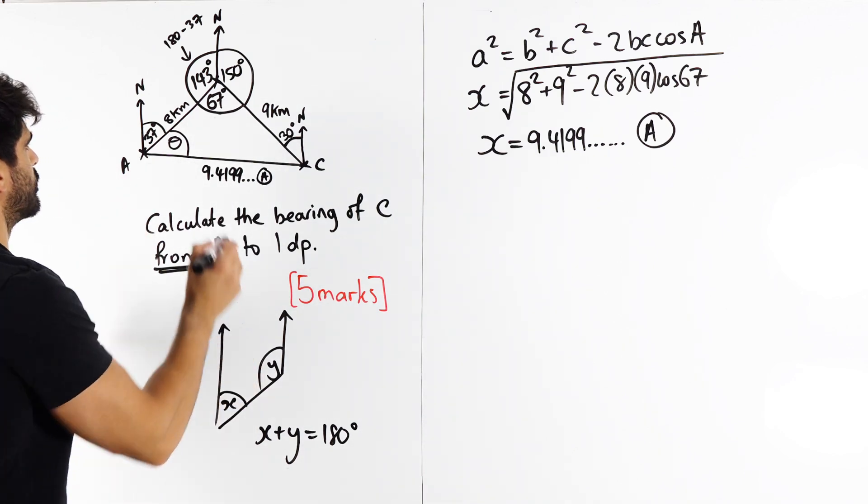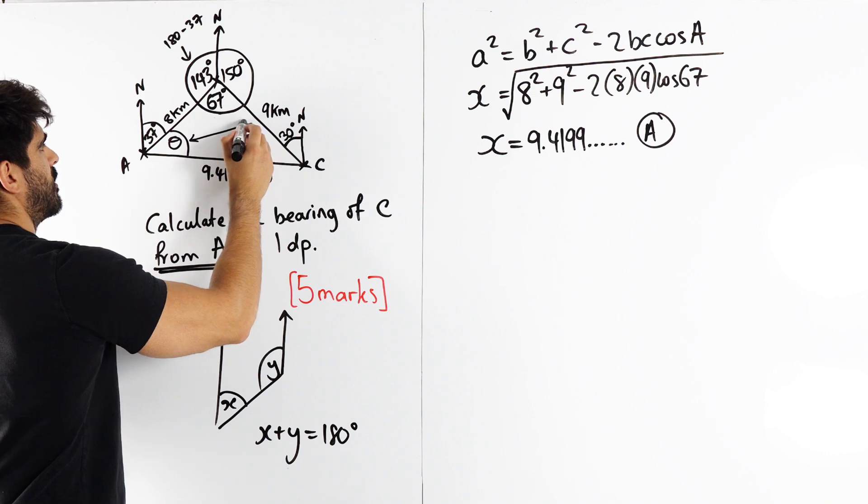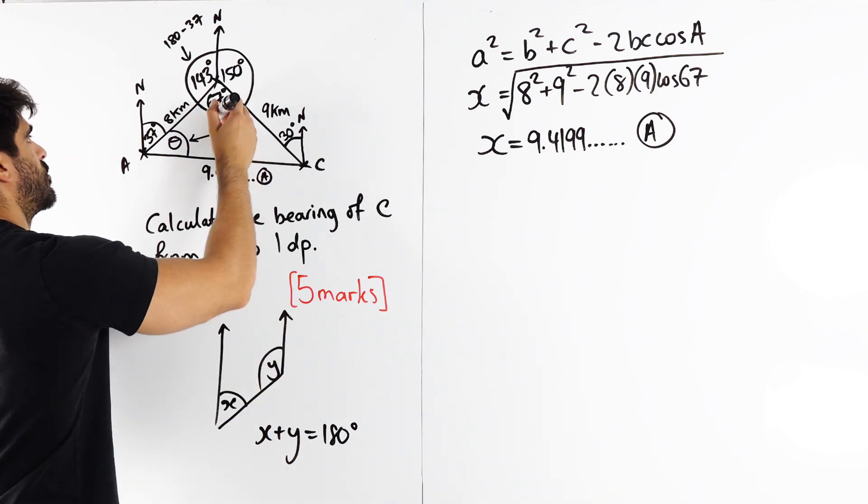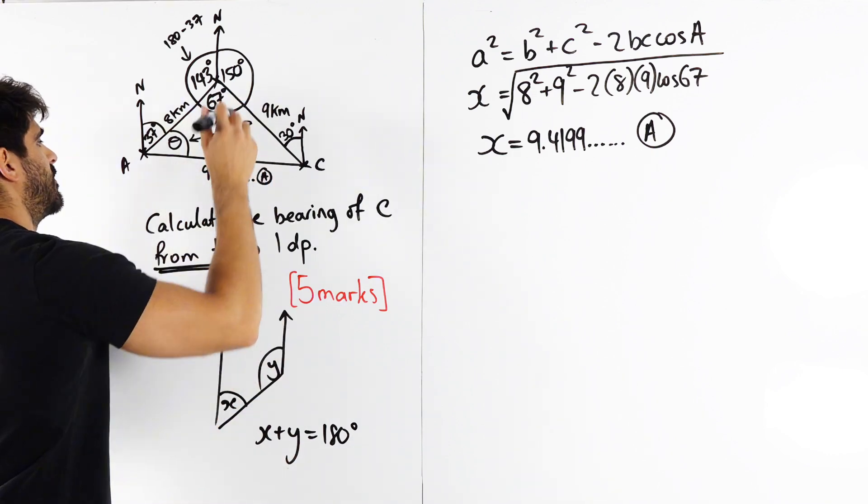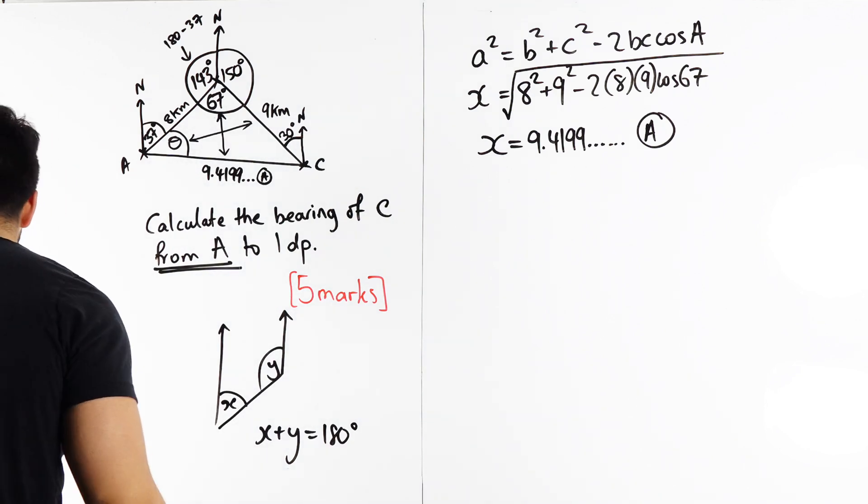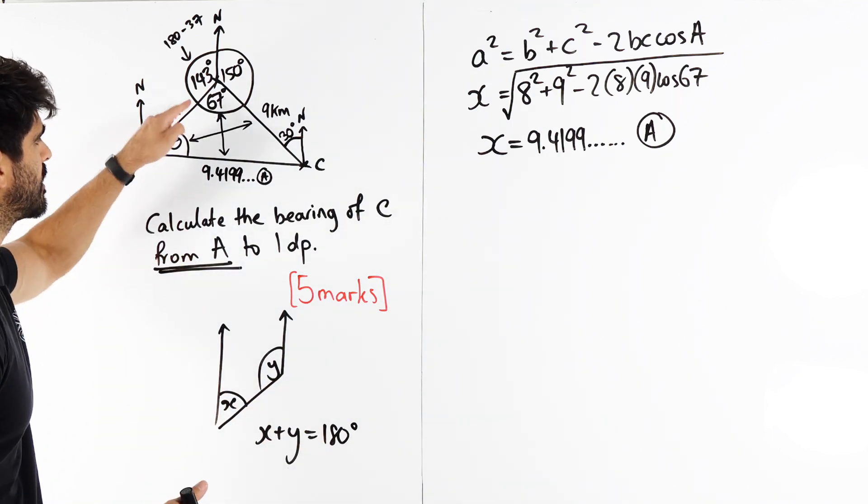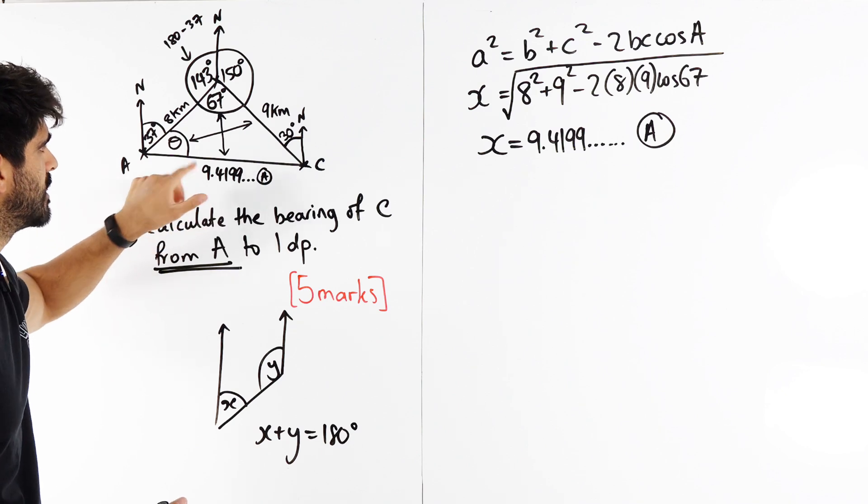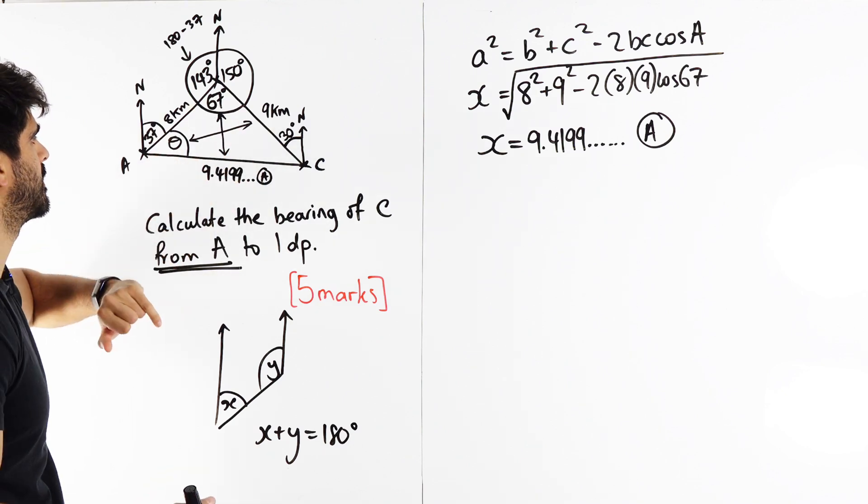Now I can use the sine rule. Sine of theta over the opposite length is equal to sine of 67 over the opposite length. Remember, the sine rule says that the ratio between sine of the angle divided by its opposite length is constant no matter which way you look at it.